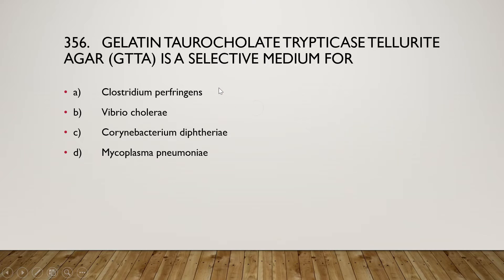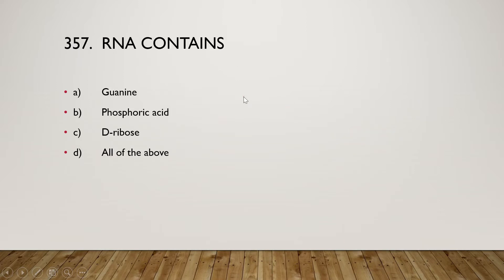Gelatin taurocholate tryptcase tellurite agar (GTTA agar) is a selective medium for which organism? The right answer is option B, Vibrio cholerae. Next question: RNA contains guanine, phosphoric acid, ribose — all of the above? The right answer is option D, all of the above, because RNA contains a sugar backbone with phosphoric acid, guanine as a nitrogenous base, and ribose.